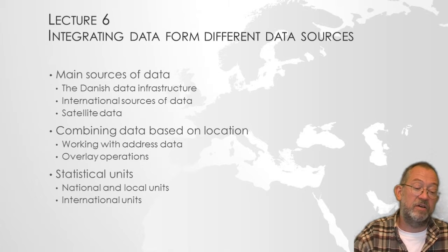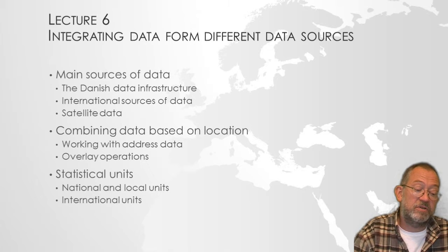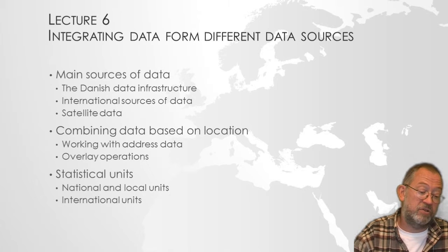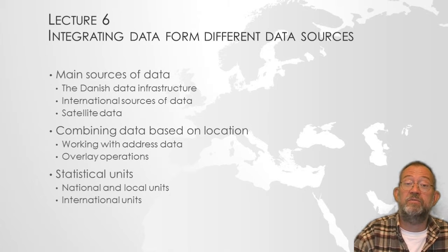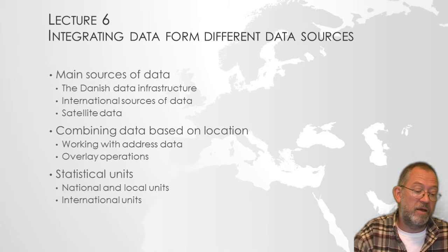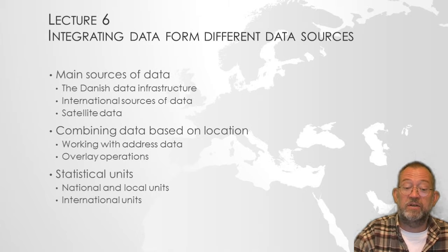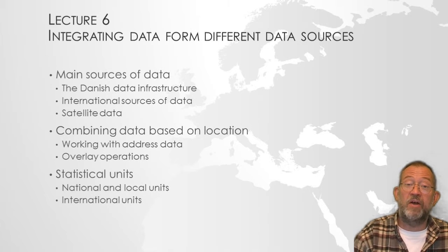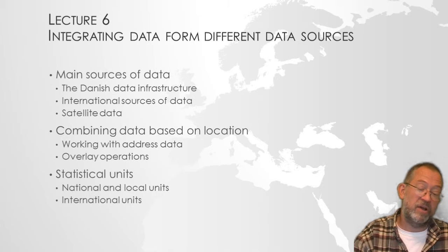In the sixth lecture, we will be talking about collecting data from different data sources — both national Danish and international. We will talk about satellite data and digital data, and how to combine them based on locations, including how to work with address data. Lots of Danish datasets are based on addresses — where do we find all the used car dealers, or pollution data, or whatever. We will also look at different types of statistical units, both national, city-level such as Copenhagen's internal units, and international ones at the EU level and even at the global level.